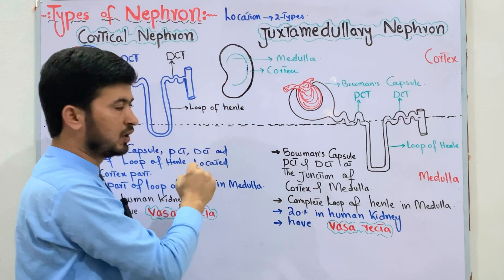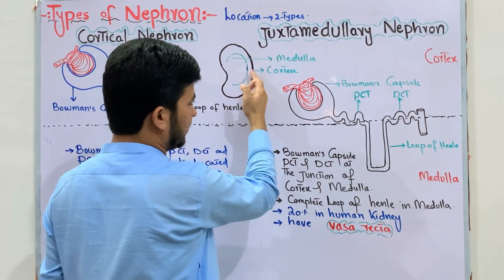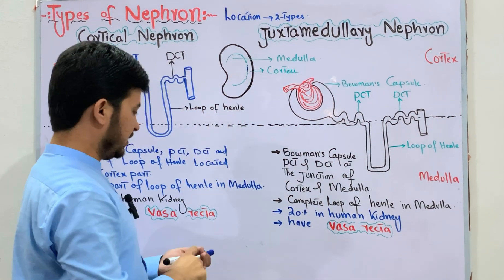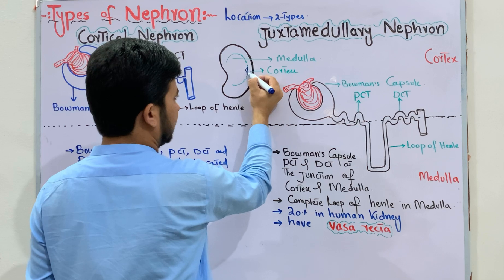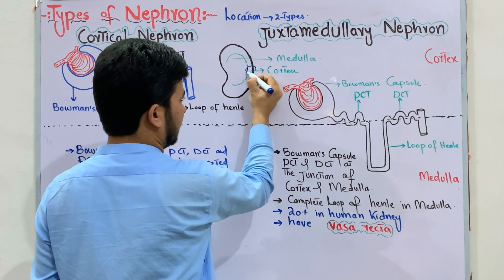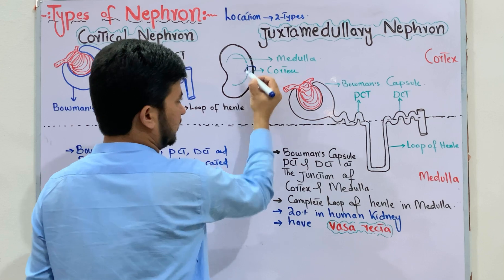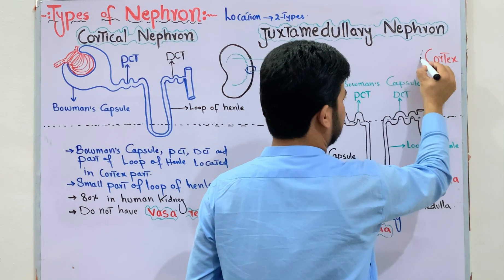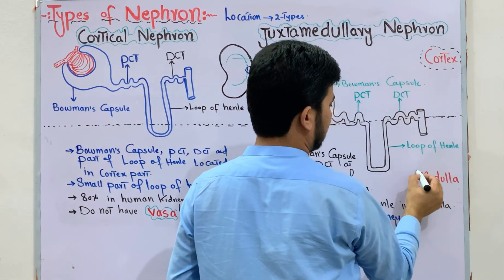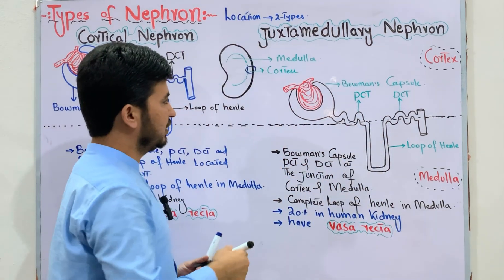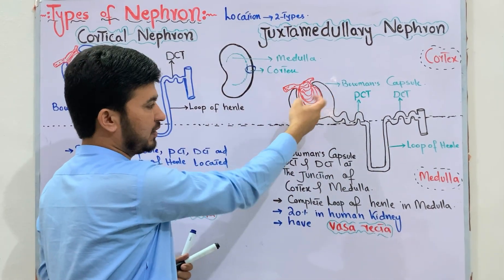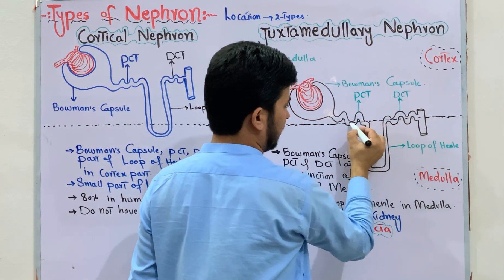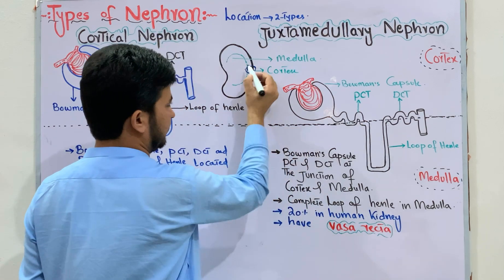Looking at this simple diagram of the kidney, the outer part is the renal cortex and the inner part is the renal medulla. The cortex is marked in the upper portion and the medulla in the lower portion. The junction between the cortex and medulla is where the two regions are separated.